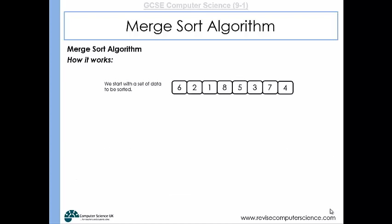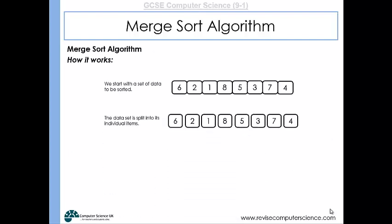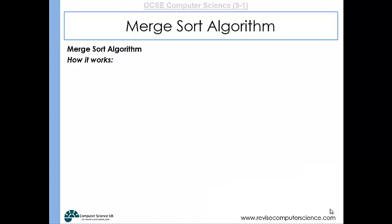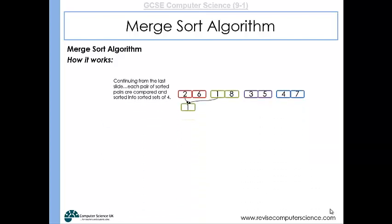If we have a set of data, the merge sort algorithm will first split that data into individual items. Then it will take each pair of items, compare them, and put them in order. So the six and the two are paired up and put in order, the one and the eight are paired up and put in order, the five and the three are swapped to put them in order, and the same with the seven and the four. So now we've got four pairs of numbers.